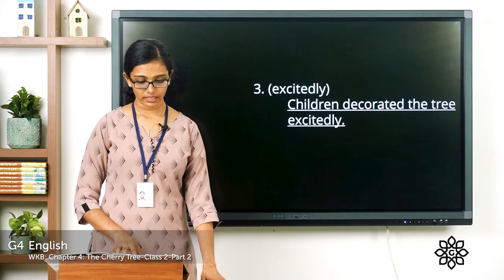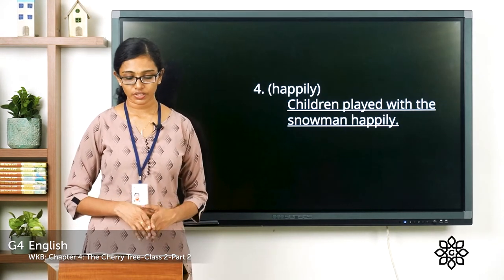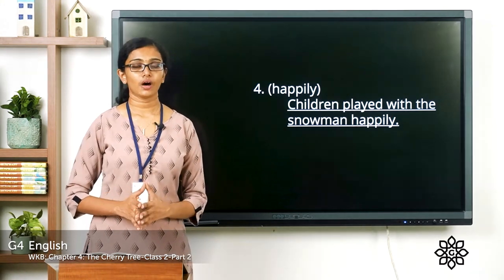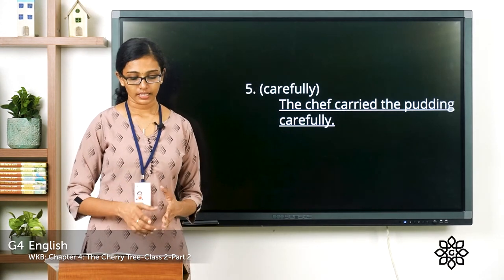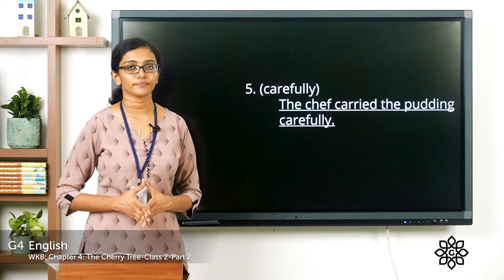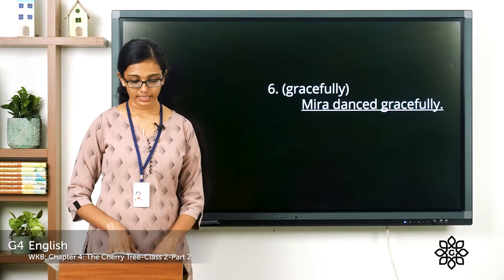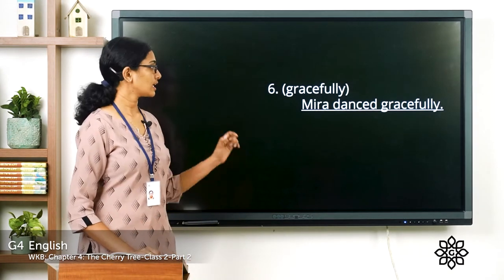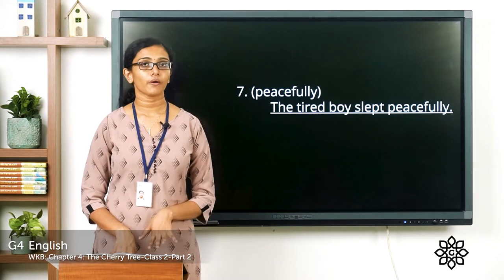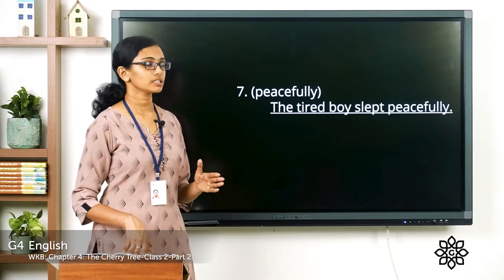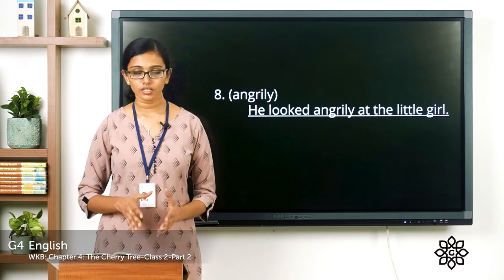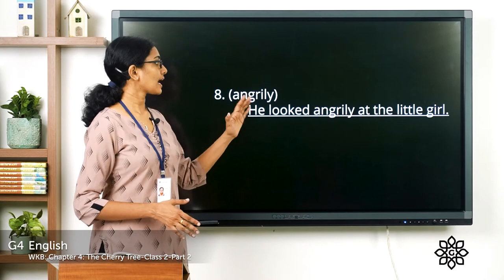Question four: the adverb is 'happily' and the picture shows children playing with the snowman. Sentence: children played with the snowman happily. Question five: you can see a girl dancing and the adverb given is 'gracefully.' Sentence: Meera danced gracefully. Question seven: the adverb is 'peacefully' and you can see a boy sleeping. Sentence: the tired boy slept peacefully. Question eight: the adverb is 'angrily' — he looked angrily at the little girl.